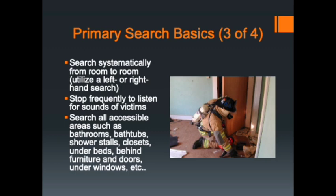If you find yourself disoriented, don't panic. Make your way into a corner — most rooms have at least four corners. Get to the outside wall and you may find a window, which can give you an orientation of what side of the building you're on. If you have your hook or halligan bar, tap on the wall — you may feel or hear a window. Once you find that anchor point, get your bearings and proceed from there.